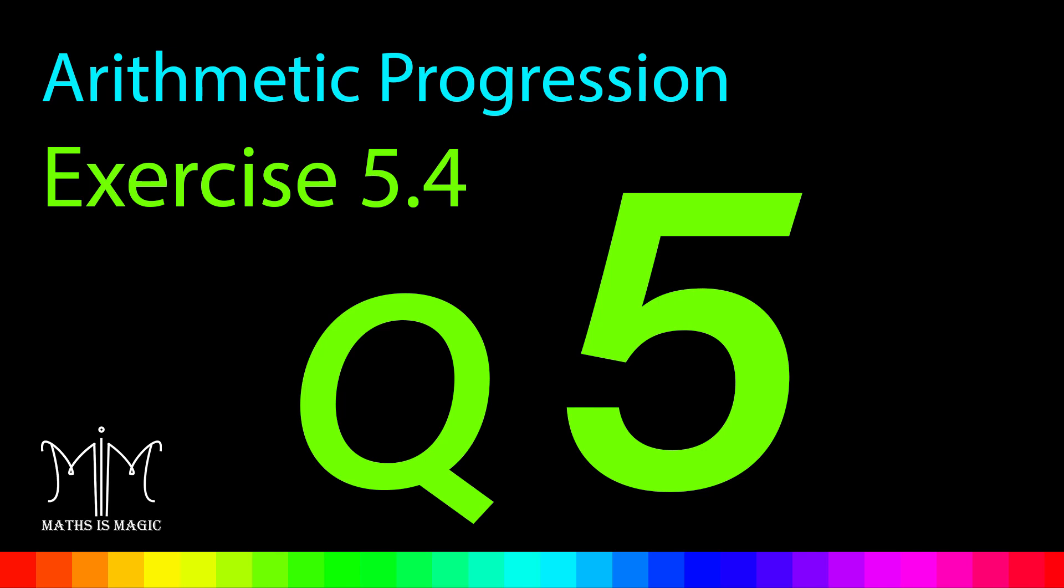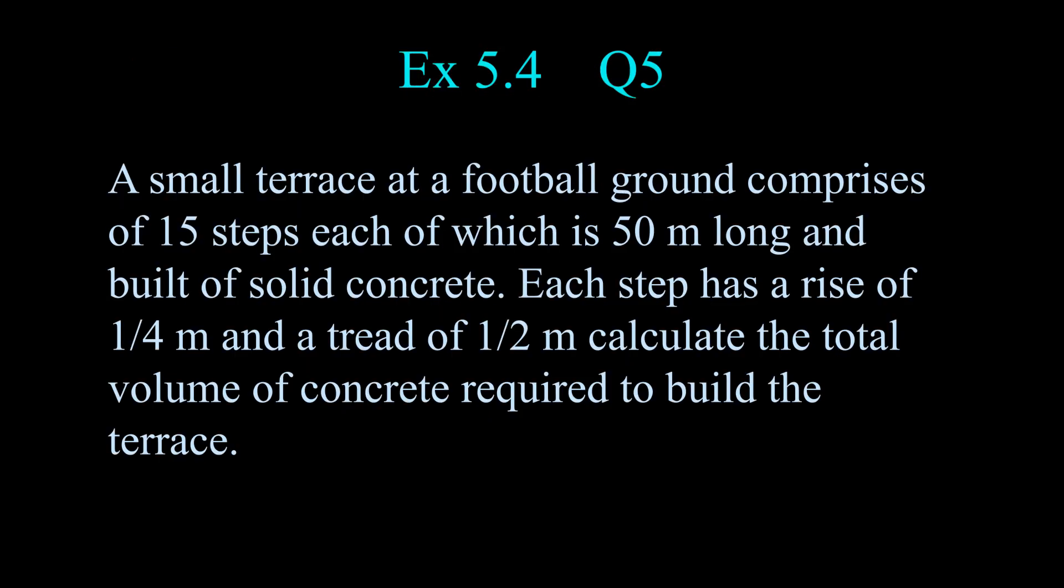Exercise 5.4, Question 5. A small terrace at a football ground comprises of 15 steps, each of which is 50 meters long and built of solid concrete. Each step has a rise of 1/4 meter and a tread of 1/2 meter. Calculate the total volume of concrete required to build the terrace.